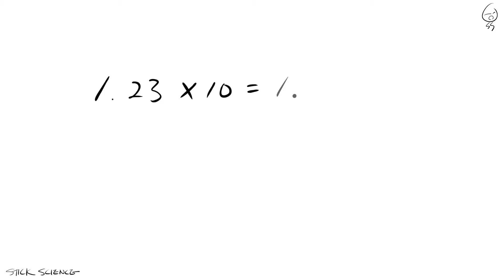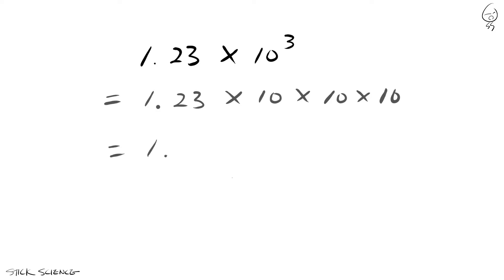Now every time you multiply a decimal with the number 10, you move the decimal one place to the right. Since 10 to the third power is just 10 multiplied 3 times, we move the decimal right 3 places.